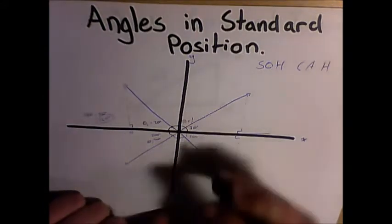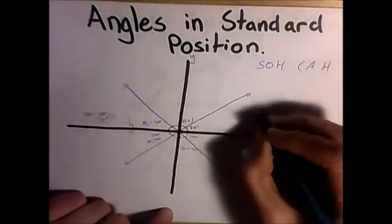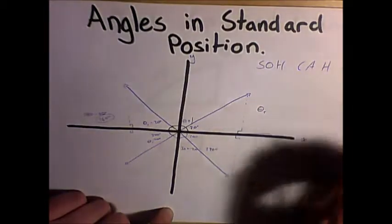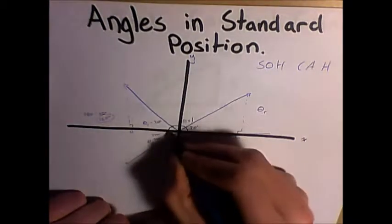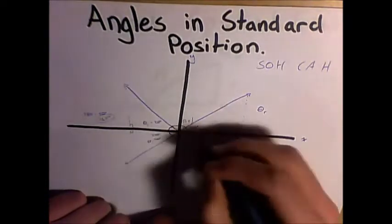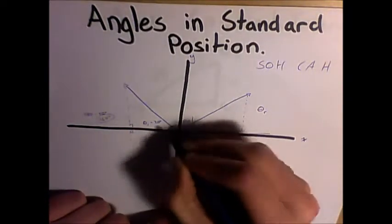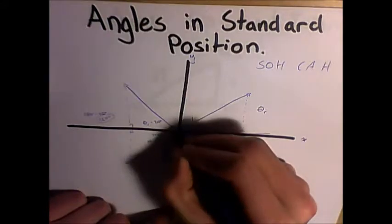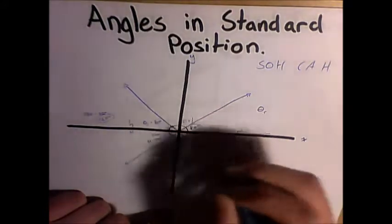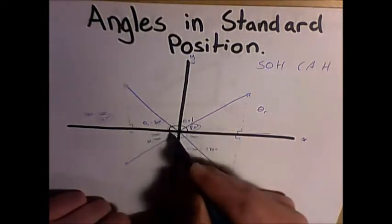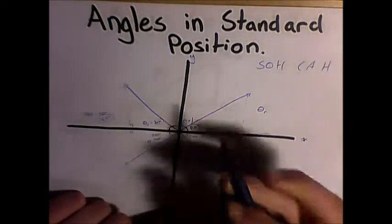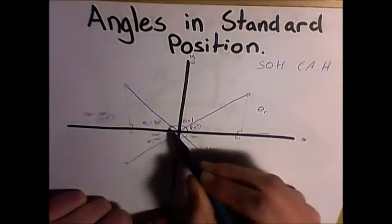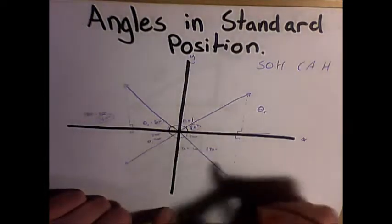We also have what's called a reference angle, or theta r. Theta r is essentially the angle from between the x-axis and the terminal arm. So here our theta r is 20 degrees, and between here it's also 20 degrees, and for this line to be mirrored or the same, the reference angle will be 20 degrees in all four triangles.